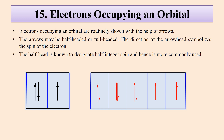Then there are arrows which show electrons occupying an orbital. Electrons occupying an orbital are routinely shown with the help of arrows. These arrows may be half-headed, which are commonly used, or sometimes full-headed arrows are also used. The direction of the arrows symbolizes the spin of the electron.